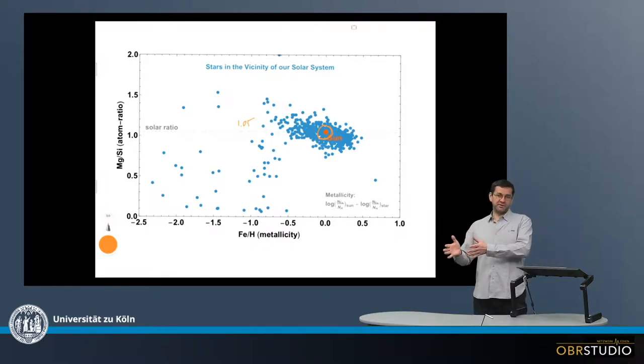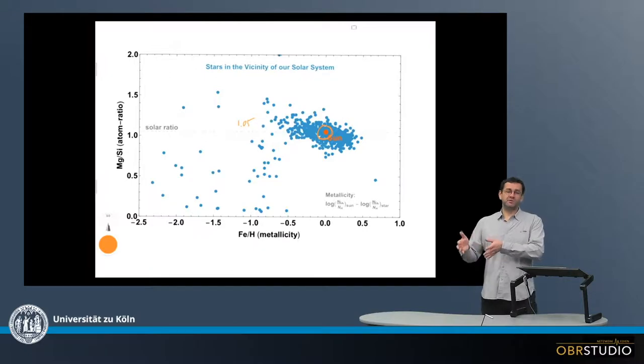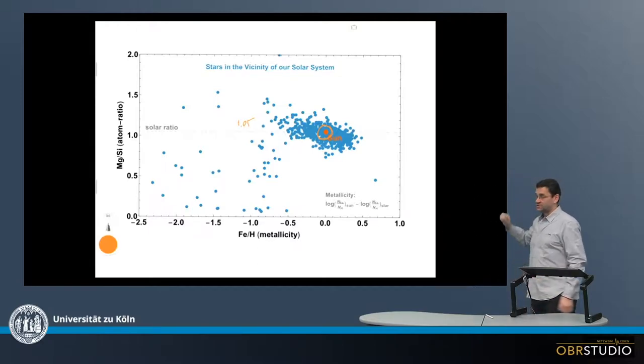But the other explanation could be that in another protoplanetary disk there was just more silicon. And this produced then the silica. So to decide between these two possibilities, we need to know the composition of these other protoplanetary disks and these other stars. And this is what this plot here delivers.